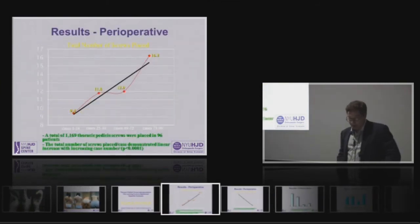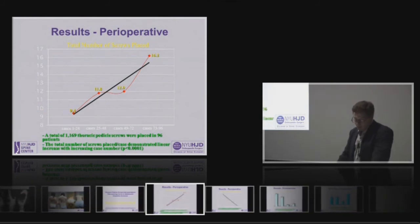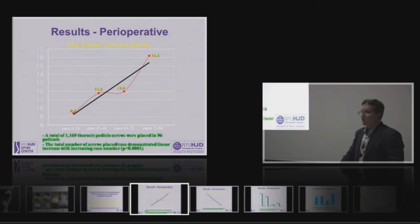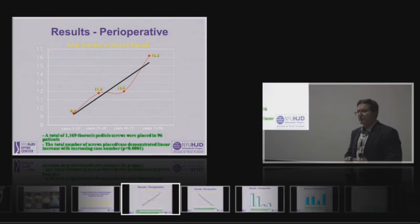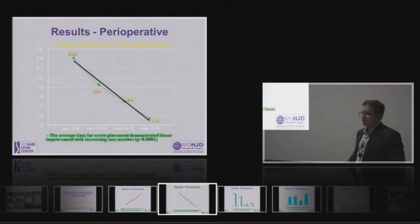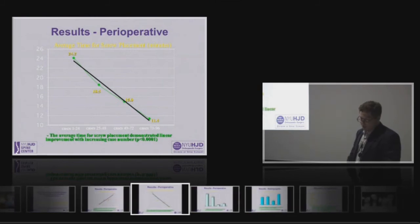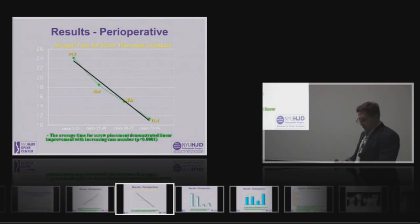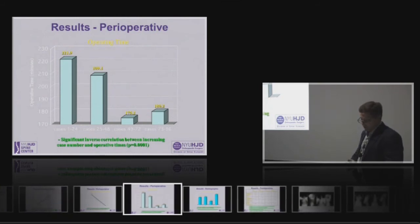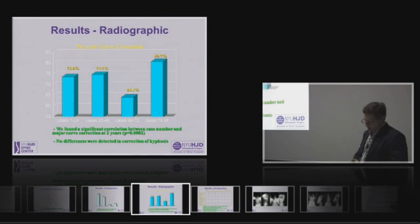In terms of screw placement, the more screws you place, the greater time it takes and the more potential for complications and blood loss. We looked at our first 96 cases to assess the learning curve and found that over time we were putting more and more screws in. There's been a trend amongst our colleagues around the world to use more screws. If you take the overall operative time divided by the number of screws placed, over time we just got better at it and the overall operative time decreased significantly. The percent curve correction also increased as the anchor density increased.